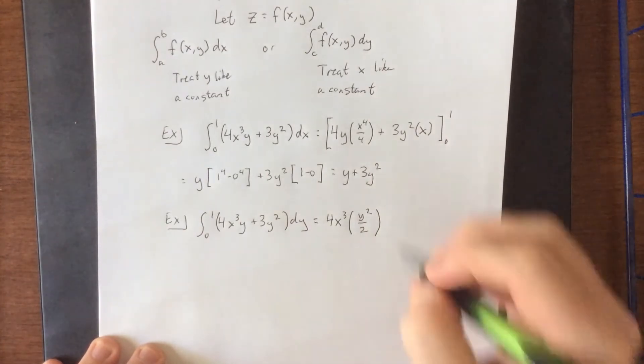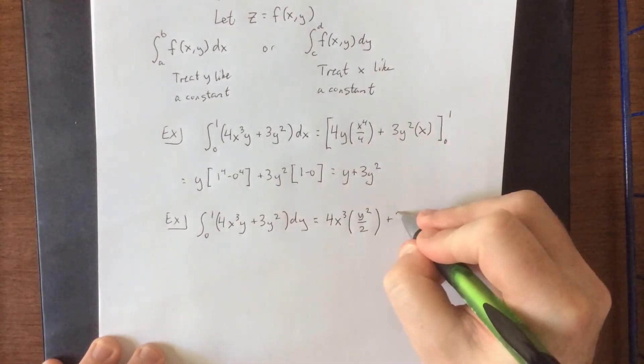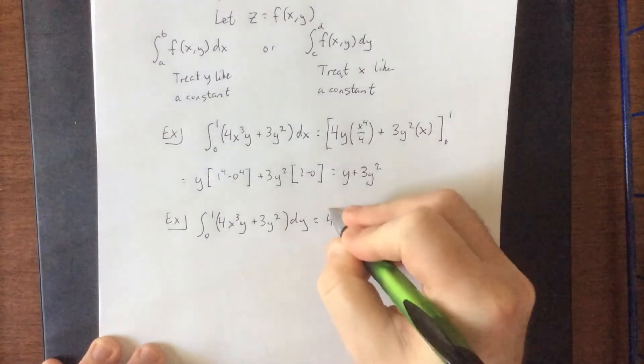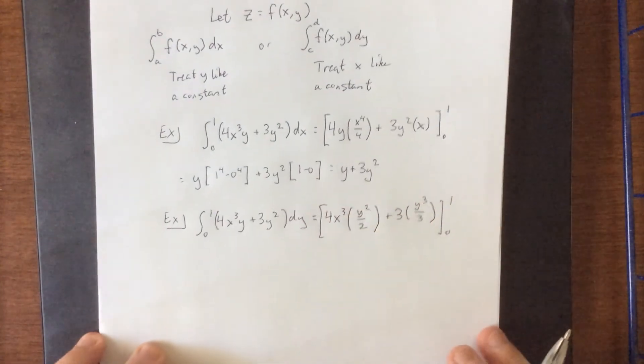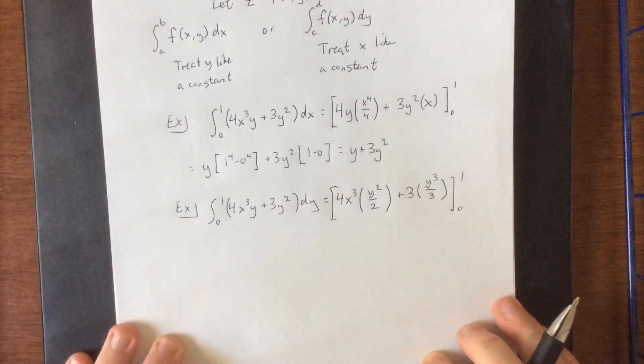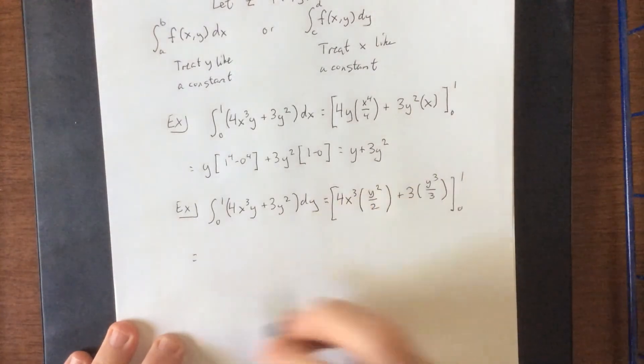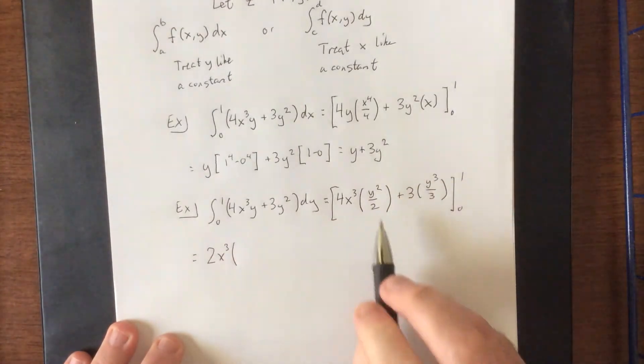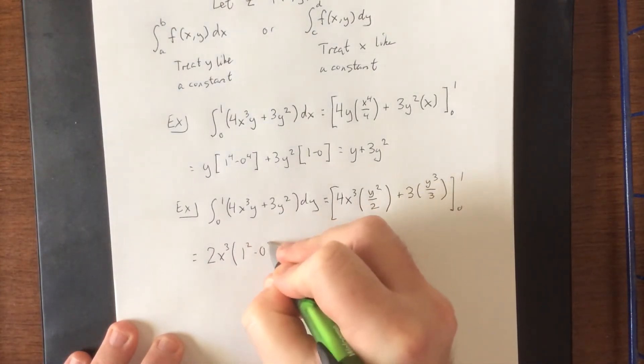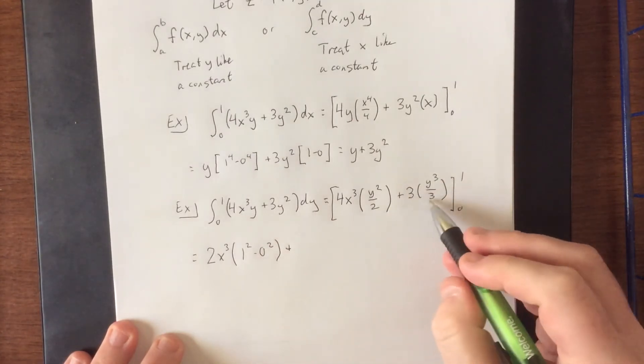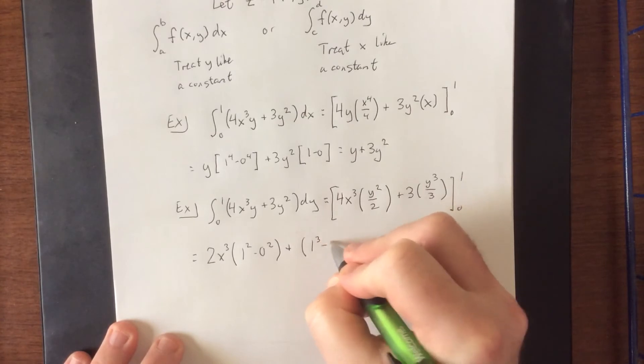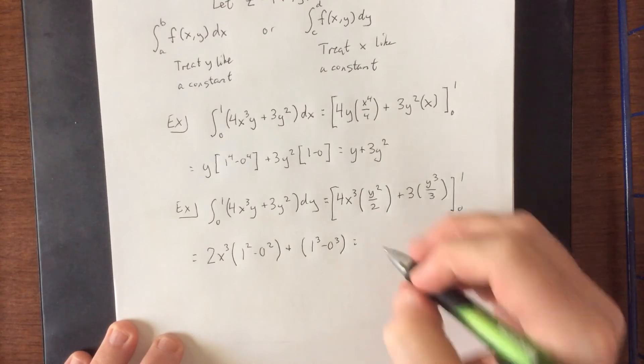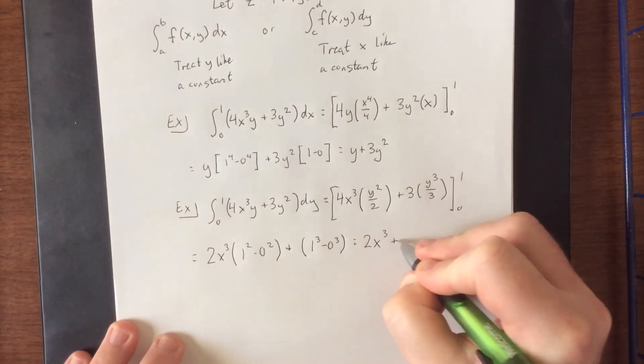3y² treating y as your variable is going to look more like an ordinary integral. Now again, we're going from bounds of 0 to 1, but this time y is going from 0 to 1. Now if we were to simplify this a bit over here, 4 over 2 is 2, x³ is still a constant, and then y² would become 1² minus 0², plugging in those bounds. We can cancel the 3 with the 3, and be left with simply 1³ minus 0³. Some quick calculations let me know that this is going to be 2x³ plus 1.